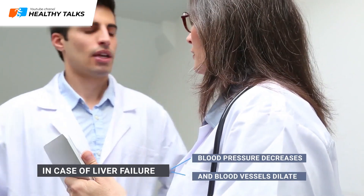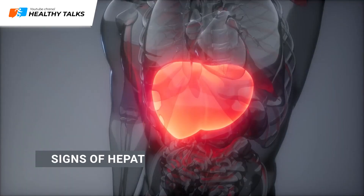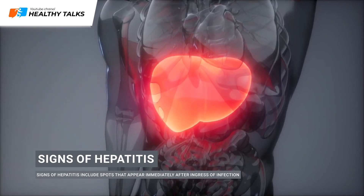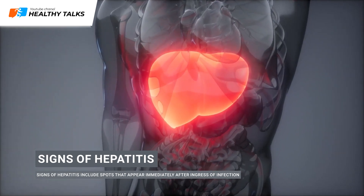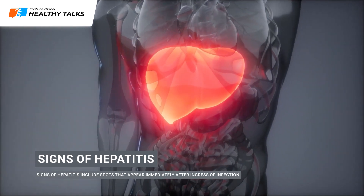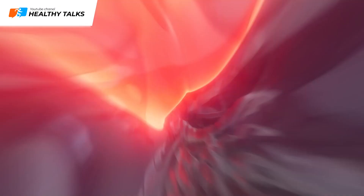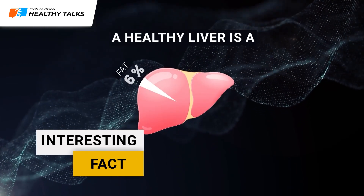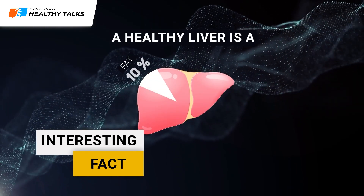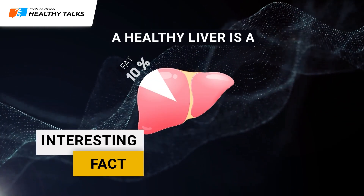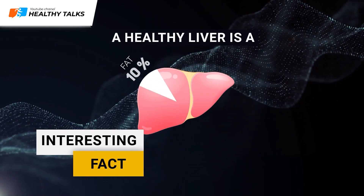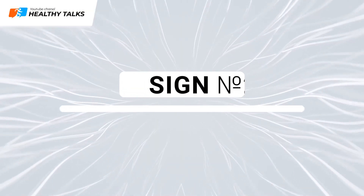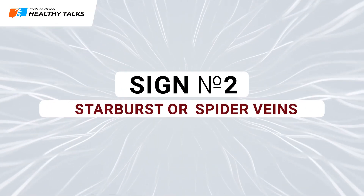Such spots may appear due to liver failure, because of which blood pressure decreases and blood vessels dilate. For example, with hepatitis, spots appear immediately after ingress of infection or when the disease turns into a chronic form. A healthy liver is 10% fat, regardless of whether a person is overweight.